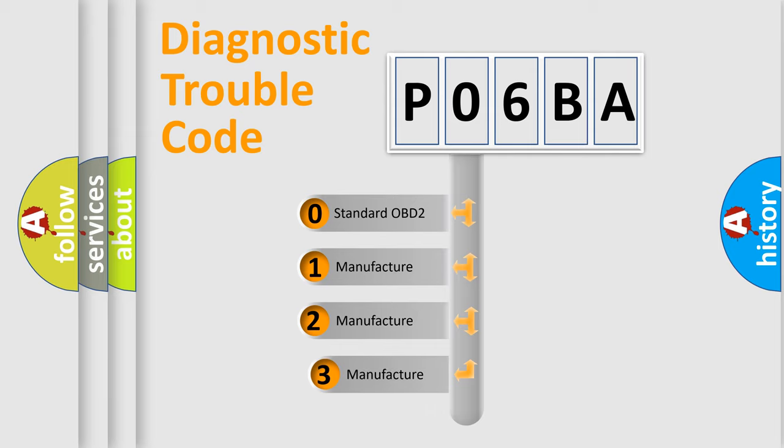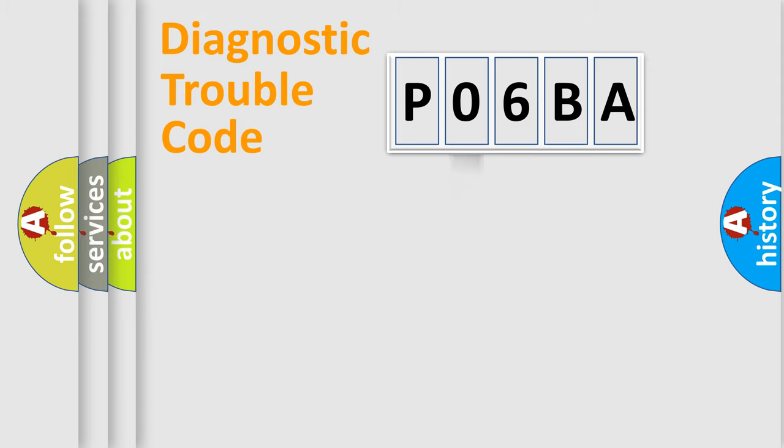If the second character is expressed as zero, it is a standardized error. In the case of numbers 1, 2, 3, it is a manufacturer-specific expression of the car error.